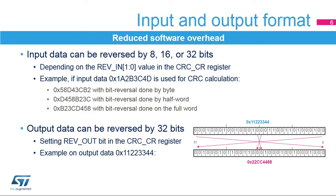The input and output format is fully configurable to reduce software overhead. It allows the application to manage different endian schemes. The input data can be reversed and performed on 8, 16, or 32 bits, depending on the REV_IN bits in the CRC_CR register. For example, input data 0x1a2b3c4d is used for CRC calculation as 0x58d43cb2 with bit reversal done by byte, 0xd458b23c with bit reversal done by half word, and 0xb23cd458 with bit reversal done on the full word. The output data can also be reversed by setting the REV_OUT bit in the CRC_CR register.